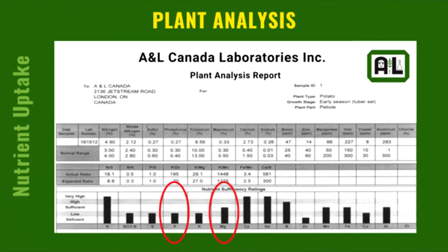Understanding tissue analysis a little deeper — there's more to it than just looking at the numbers. This is a potato petiole from early season, and we can see some issues with phosphorus levels being low. But going back to the soil sample, this field has lots of phosphorus. This farmer is putting down 150 pounds of P2O5 when planting, yet we're having trouble getting phosphorus into the zone it should be. Magnesium levels are fairly decent, but this is actually a magnesium deficiency — I'll explain why.